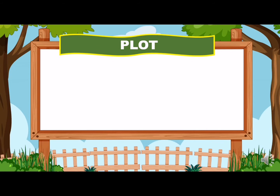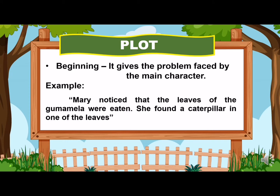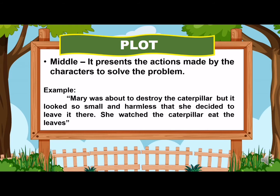Next, we have the plot. The plot is made up of the events that happened in the story. It consists of beginning, middle, and ending. In the beginning plot, it gives a problem faced by the main character. In the story, the beginning plot is: Mary noticed that the leaves of the gumamela were eaten — she found a caterpillar in one of the leaves. Next is the middle plot. It presents the actions made by the characters to solve the problem. Mary was about to destroy the caterpillar, but it looked so small and harmless that she decided to leave it there. She watched the caterpillar eat the leaves.